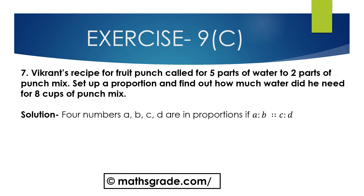Now we will solve question number 7. Vikram's recipe for fruit punch called for 5 parts of water to 2 parts of punch mix. Set up a proportion and find out how much water he needed for 8 cups of punch mix.